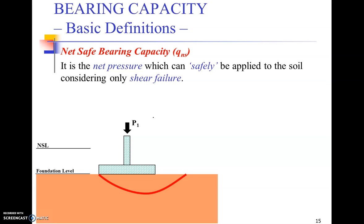It is the net pressure which can be safely applied to the soil considering only shear failure. So if you just divide the net ultimate bearing capacity with a factor of safety, which is generally greater than one, we can ensure that our net ultimate bearing capacity limit is still safe.